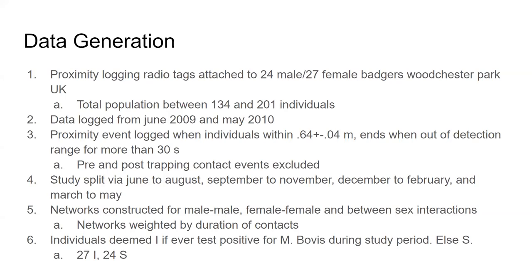These are weighted networks, weighted by the duration of contact, so when individuals come into contact the system logs how long that contact lasts. The study was split into discrete seasonal time periods: June to August, September to November, December to February, and March to May. Individuals were deemed positive or infectious if they ever tested positive for M. bovis during the study period; otherwise they were susceptible. At the end of the period there were 27 infectious and 24 susceptible badgers.